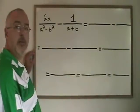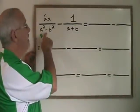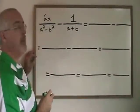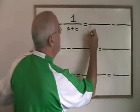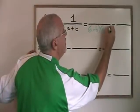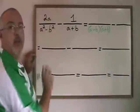The only factorable expression we have, though, is in the denominator of the first fraction, which is a difference of squares. a squared minus b squared factors to a minus b times a plus b. The rest of the expressions stay the same.